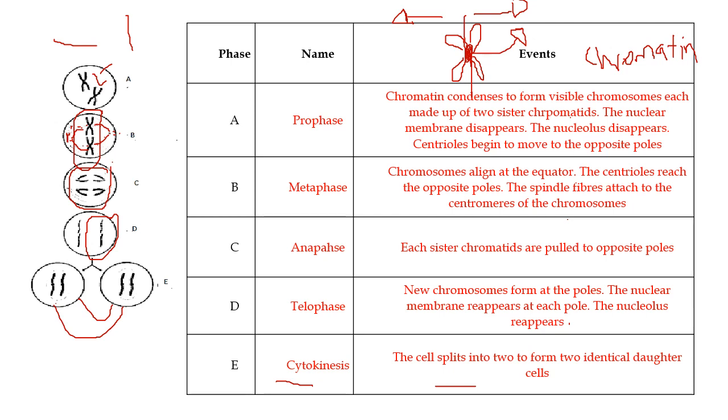It says, why are telomeres important? So telomeres are important. Just think of them as protective elements for the ends of the chromosomes. And they also allow for the attachment of enzymes to the ends of the chromosomes.